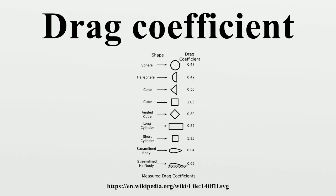The drag coefficient is always associated with a particular surface area. The drag coefficient of any object comprises the effects of the two basic contributors to fluid dynamic drag: skin friction and form drag. The drag coefficient of a lifting airfoil or hydrofoil also includes the effects of lift-induced drag. The drag coefficient of a complete structure such as an aircraft also includes the effects of interference drag.